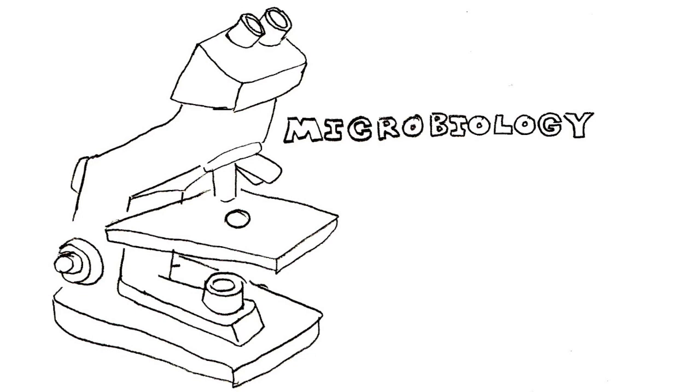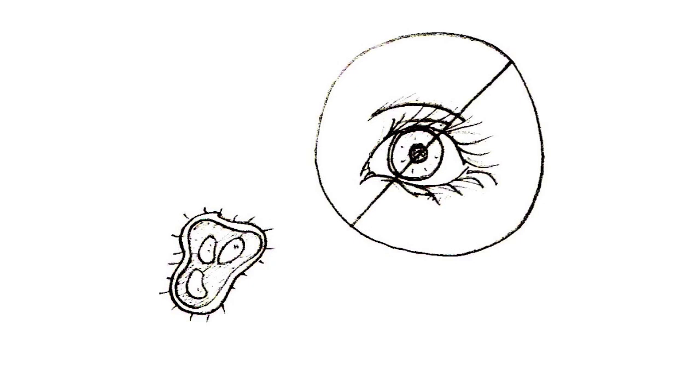Microbiology is a branch of biology that deals with microorganisms, or things that cannot be seen with the naked eye. Some of these organisms are a cell cluster, single cell, or they don't have any cells at all.